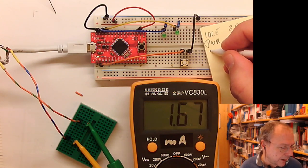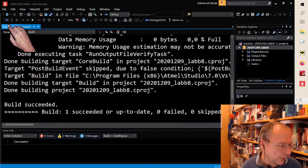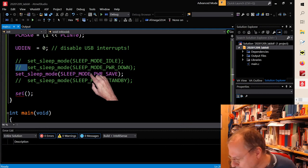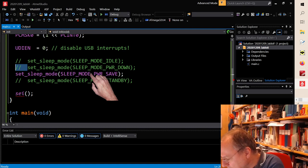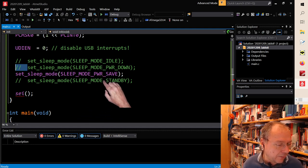So this was the power save, what's the name - I think I'll show you the code again, it was power save. So this was power down and this was power save, 1.7 milliamps.